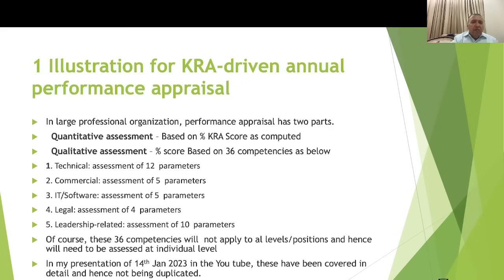One illustration of the KRA-driven annual performance appraisal system: for annual performance appraisal, evaluation is proposed on two parameters. First, quantitative assessment based on the KRA score. Second, qualitative assessment based on competencies — covering 36 competencies across five types: technical assessment on 12 parameters, commercial assessment on 5 parameters, IT/software competency on 5 parameters, legal competency on 4 parameters, and leadership competency on 10 parameters. These 36 competencies are not applied to all levels and were covered in detail in a previous presentation.